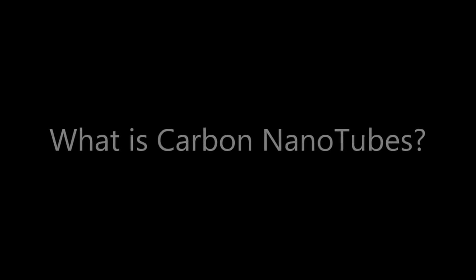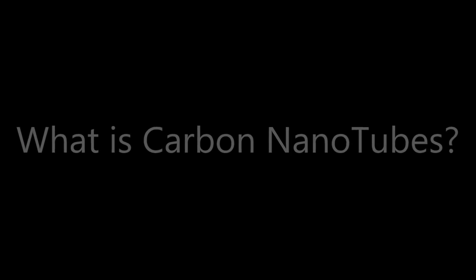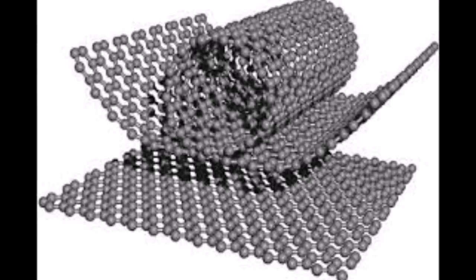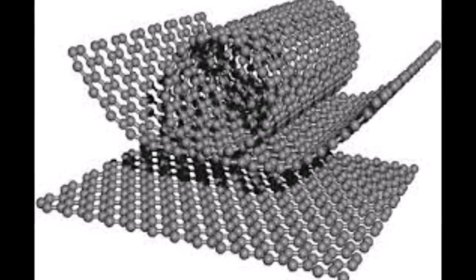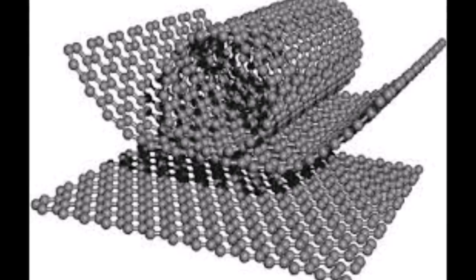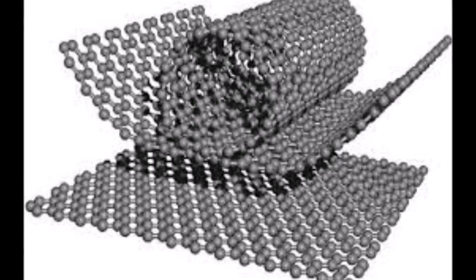So what is a carbon nanotube? Carbon nanotubes are cylindrical molecules that consist of rolled-up sheets of single-layer carbon atoms, which is graphene. Like their building block graphene, carbon nanotubes are chemically bonded with sp2 bonds, an extremely strong form of molecular interaction.